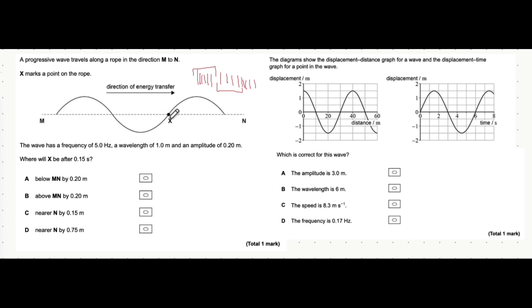It tells you x marks a point on the rope, the frequency is 5 hertz, the wavelength is 1 meter and the amplitude is 0.2. Where will x be after 0.15 seconds?